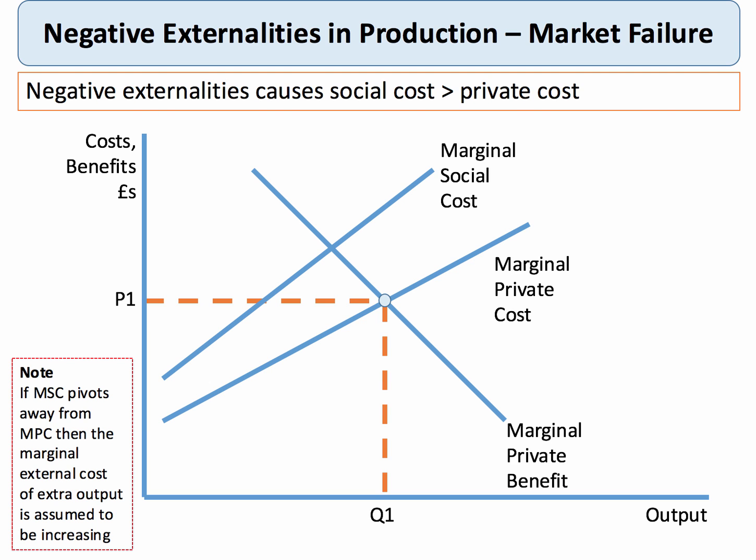Notice in the diagram that if the marginal social cost pivots away from MPC, then we're assuming that the marginal external cost of the extra output is getting bigger. I think this is a realistic assumption to make, particularly if you think about the concentrations of particles in the atmosphere and the external cost from increasing congestion. The key now is that marginal social cost lies above private cost — the vertical distance between the two curves is the external cost associated with producing output Q1.